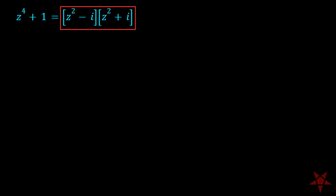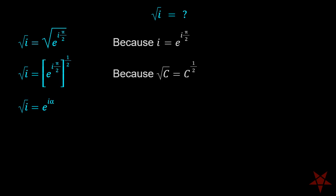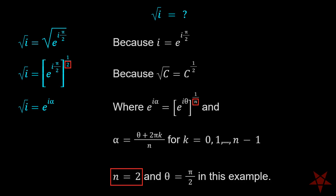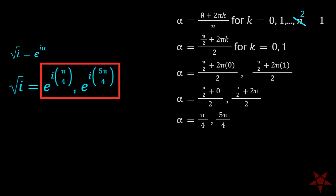The two second-order polynomials break down further into first-order components, each of which contains the square root of i. Expressing i as e to the i pi over 2, and utilizing the formula for the nth root of a complex number where we insert 2 for the value of n, as well as pi over 2 for the value of theta, we get e to the i pi over 4 and e to the 5i pi over 4.